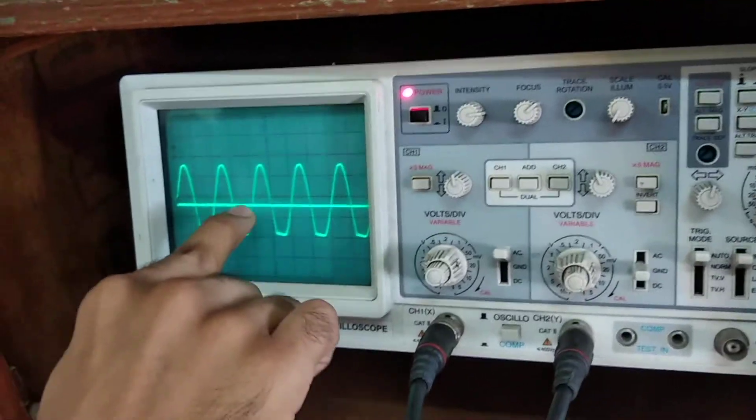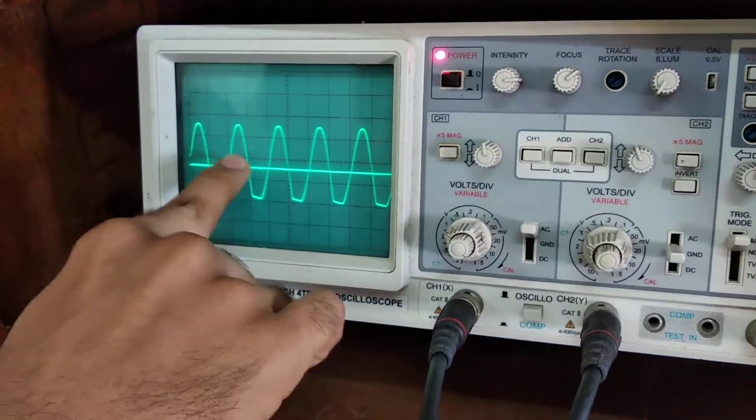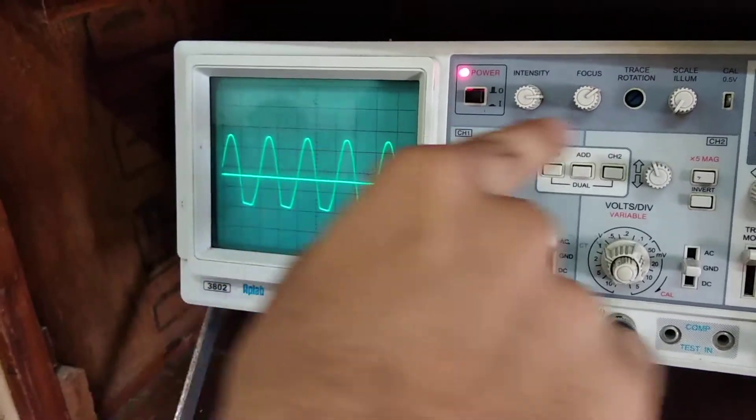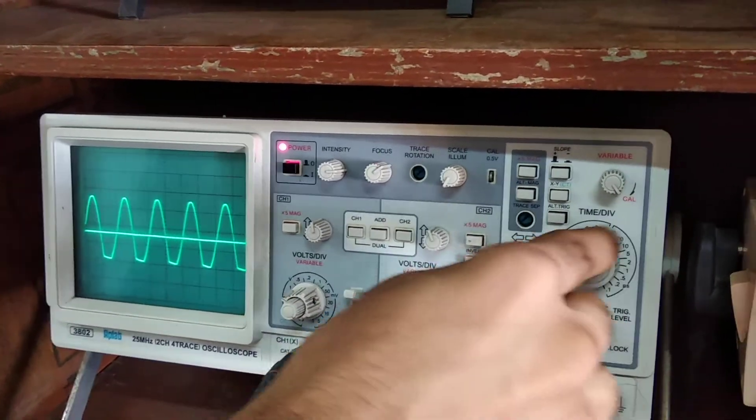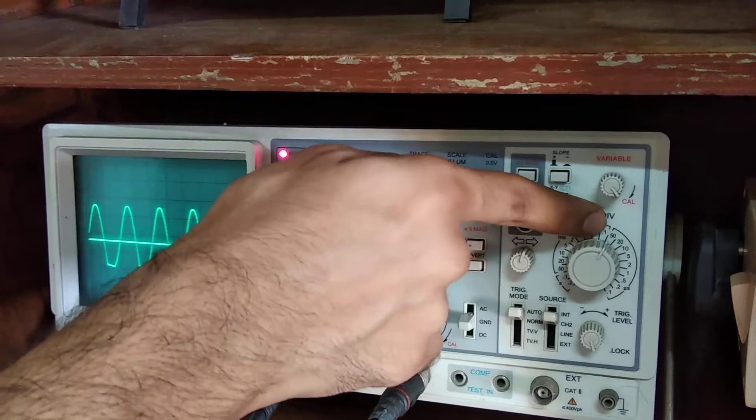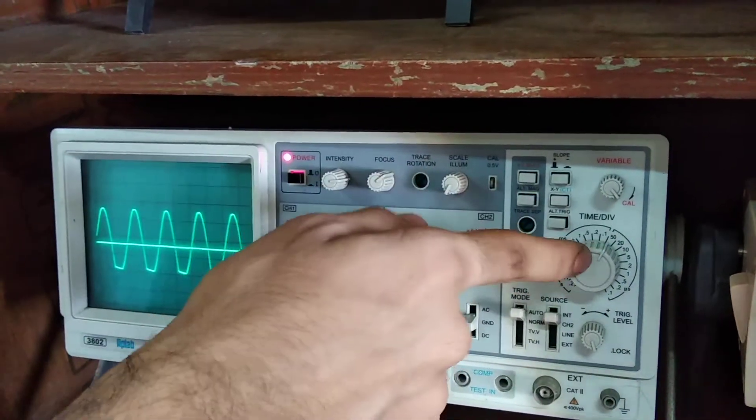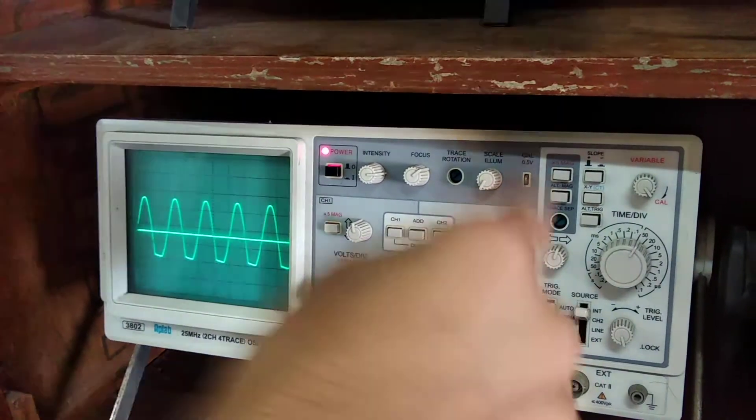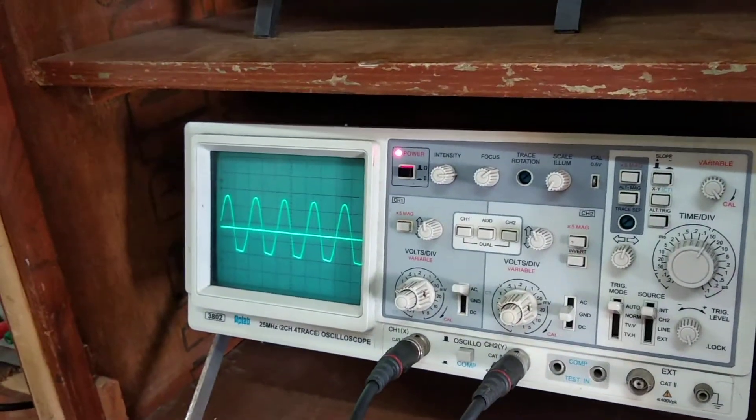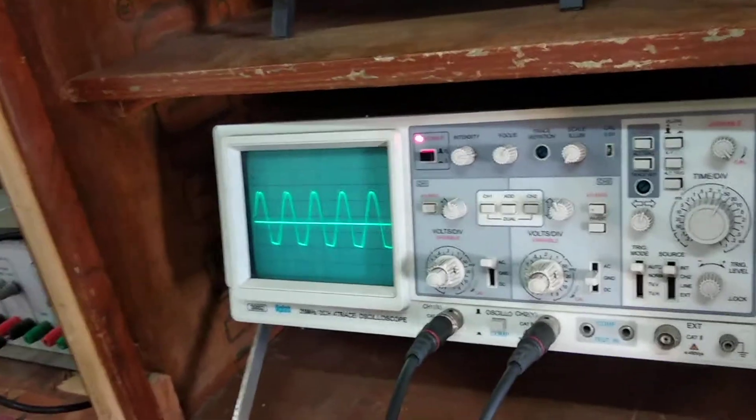You can see this one cycle takes around 2 divisions. 2 divisions into the setting, it is 50 microseconds. So 2 divisions into 50 microseconds, that would be the time period of the signal. And you just divide it by 1 and you will get the frequency.